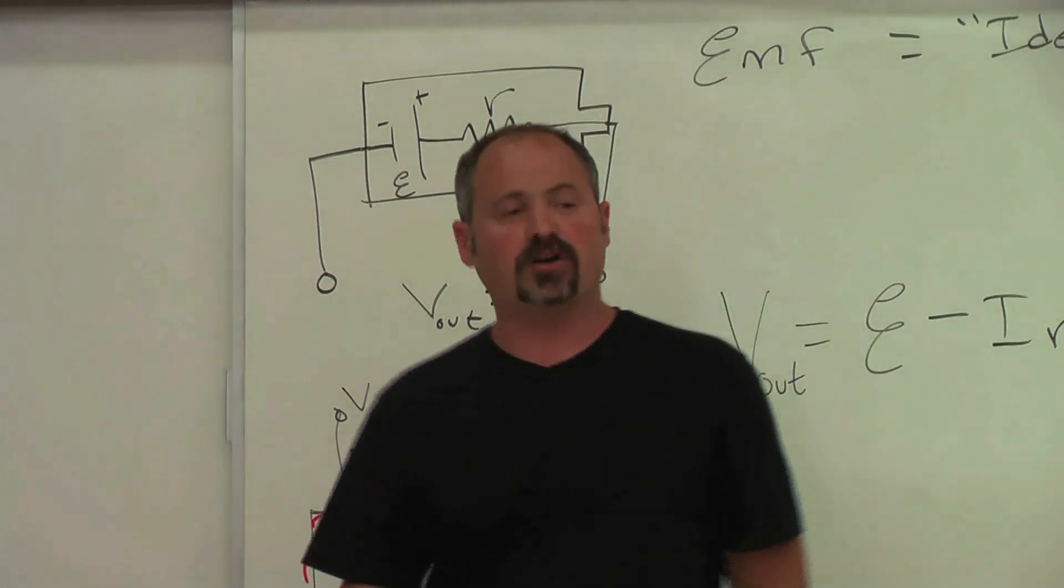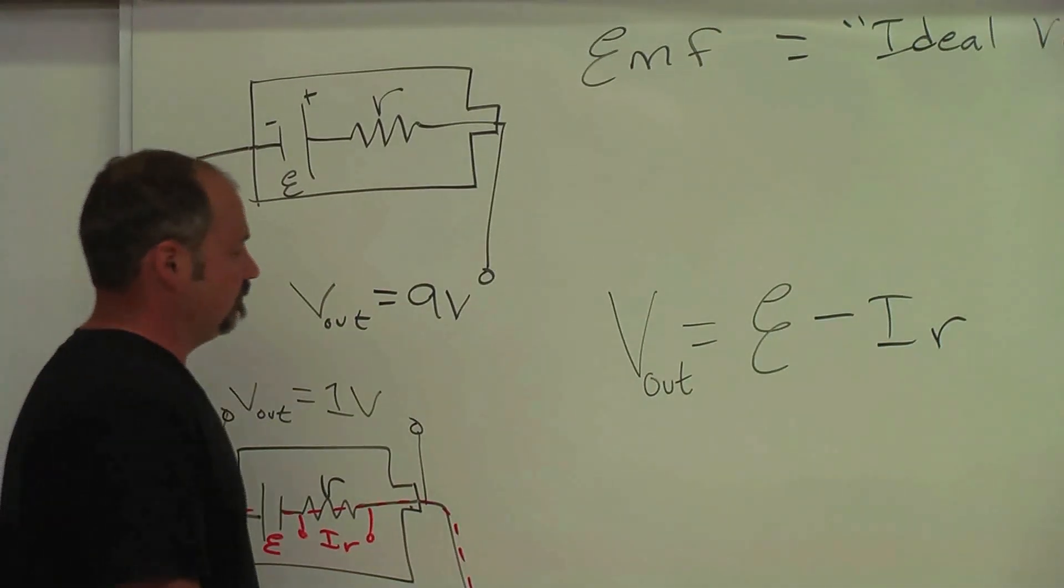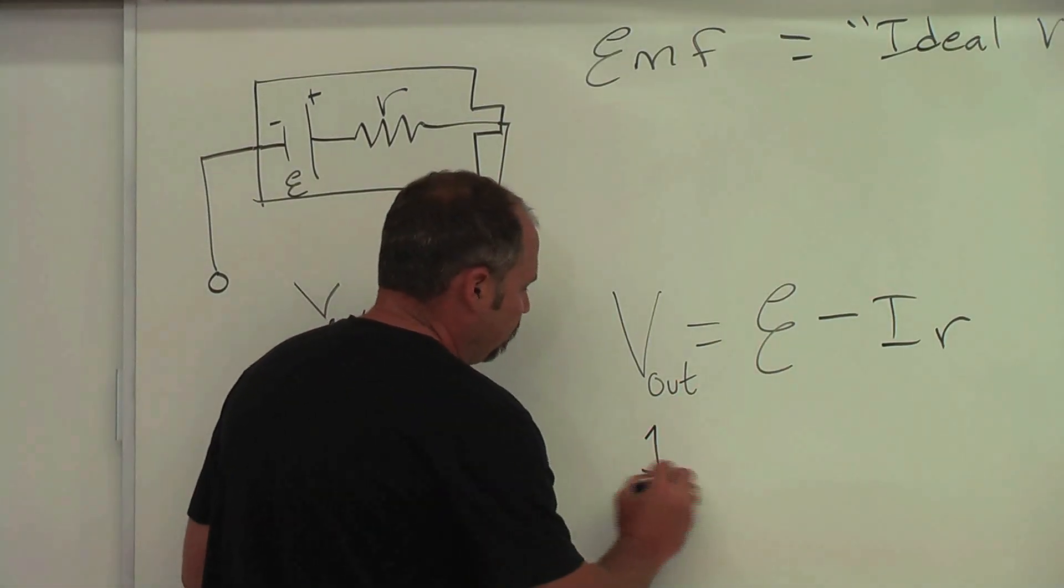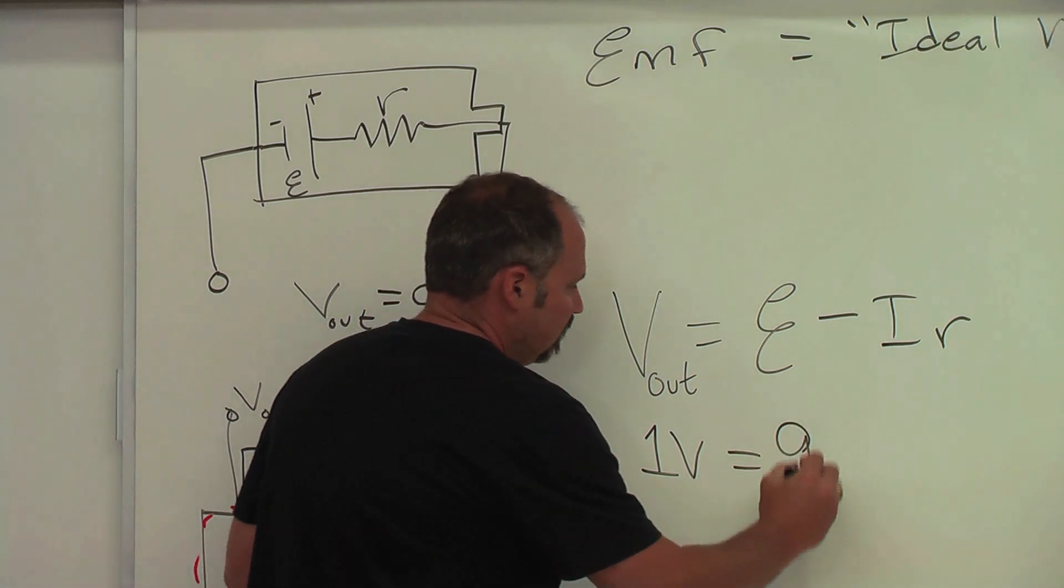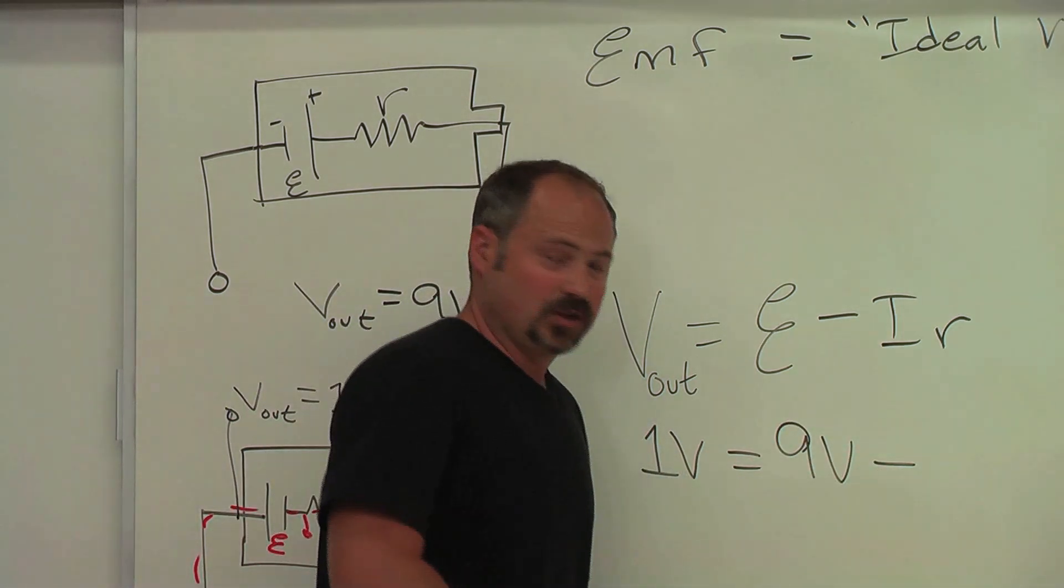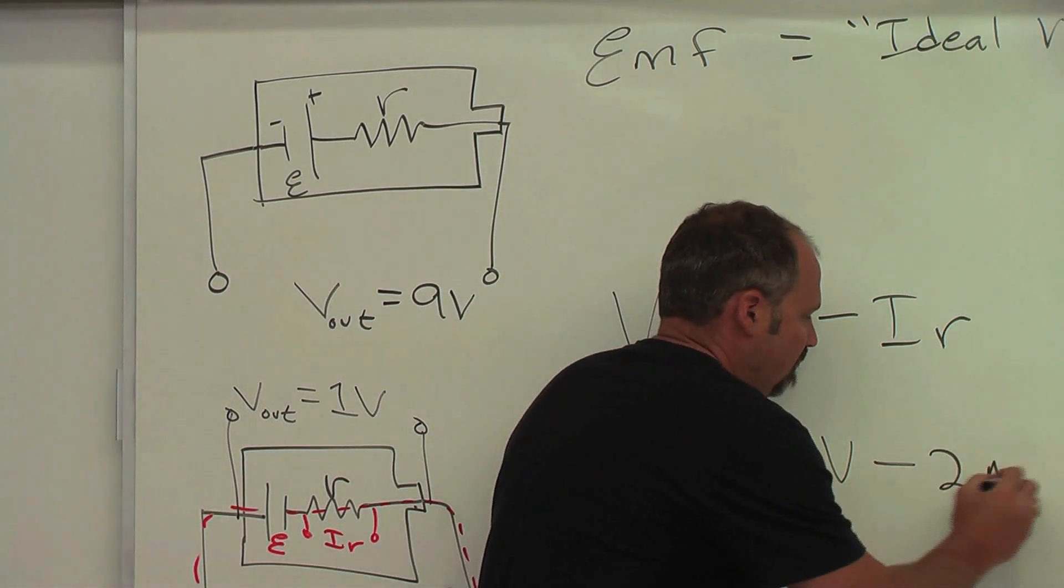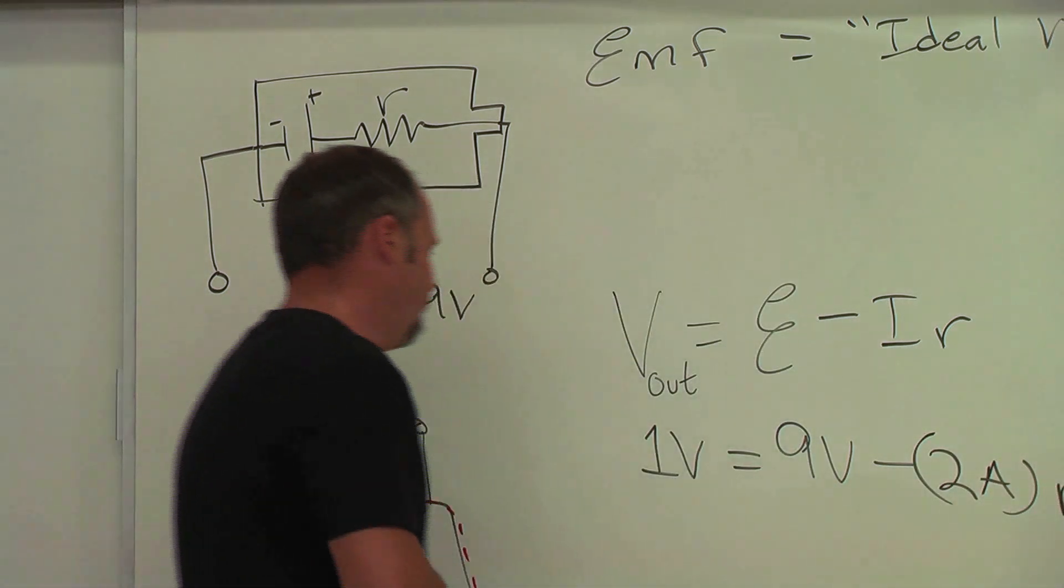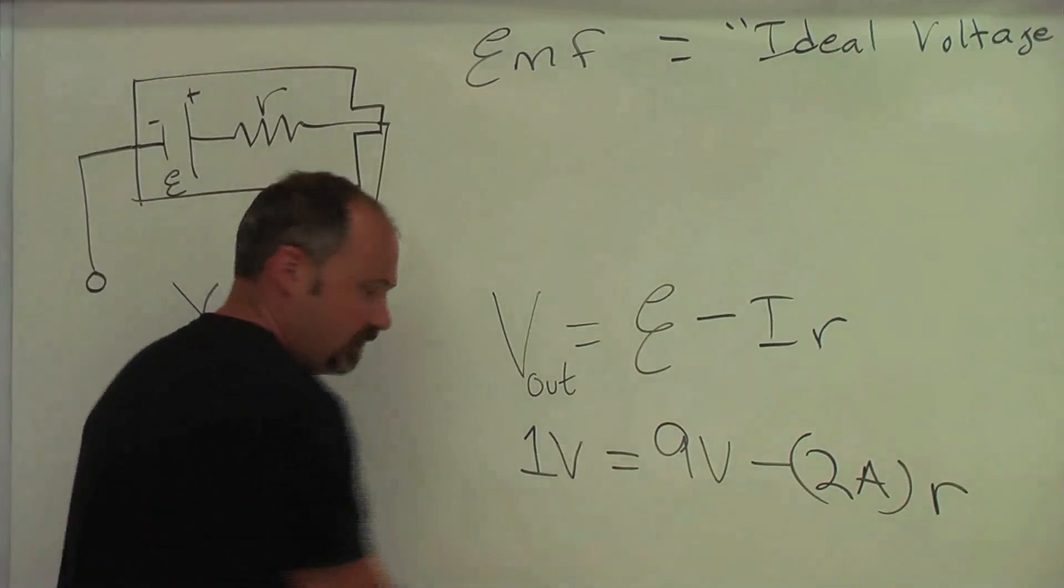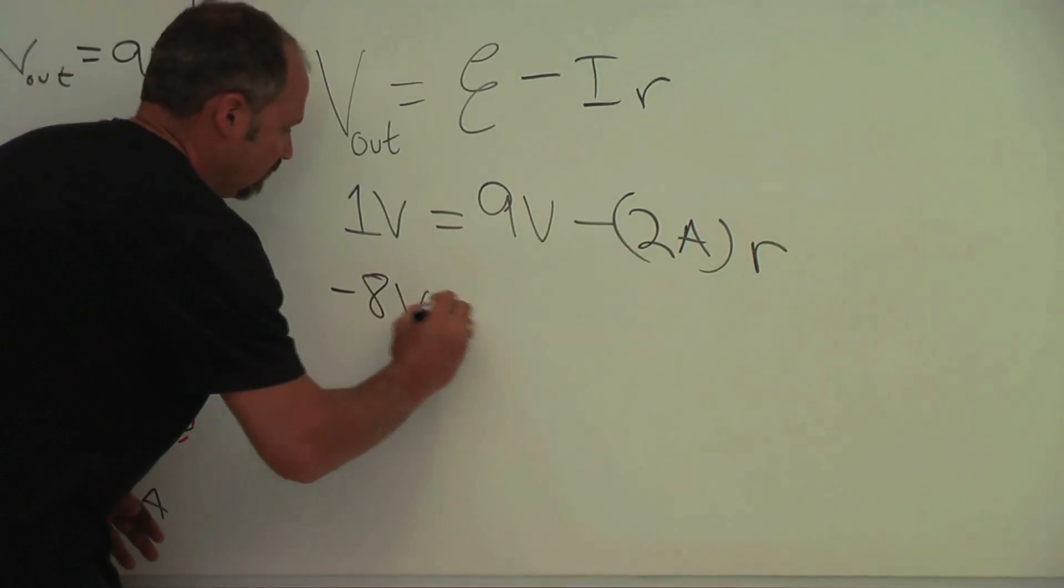And so now we can plug in our numbers to find the internal resistance of that battery. Well, when it was hooked up we got 1 volt here, the ideal voltage is 9 volts, the current 2 amps, and now if we subtract the 9 volts from both sides, we get a minus 8 volts here.